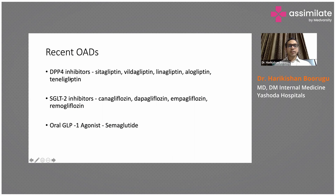Some examples of DPP-4 inhibitors are sitagliptin, vildagliptin, linagliptin, alogliptin, and teneligliptin.